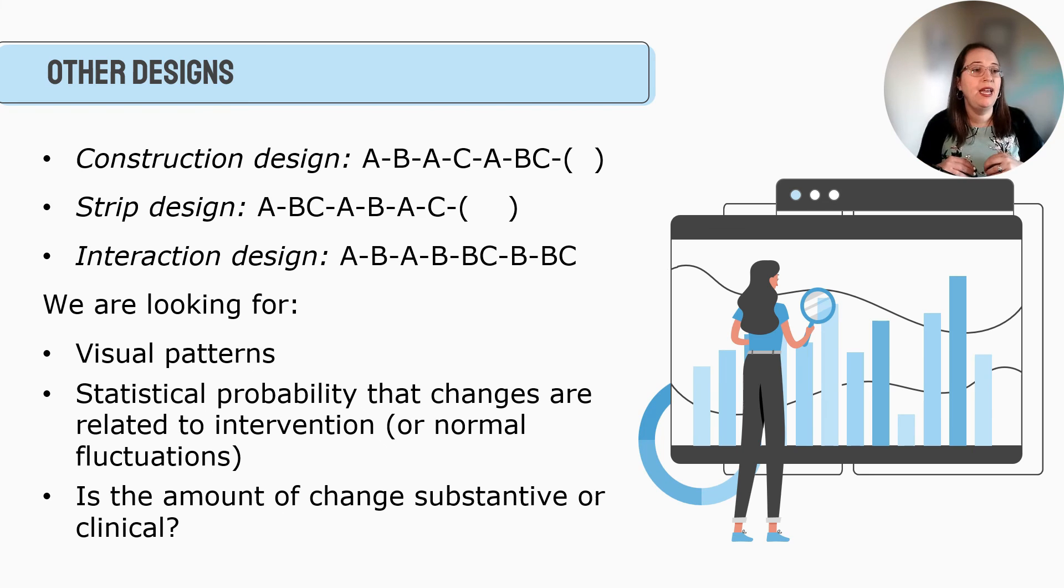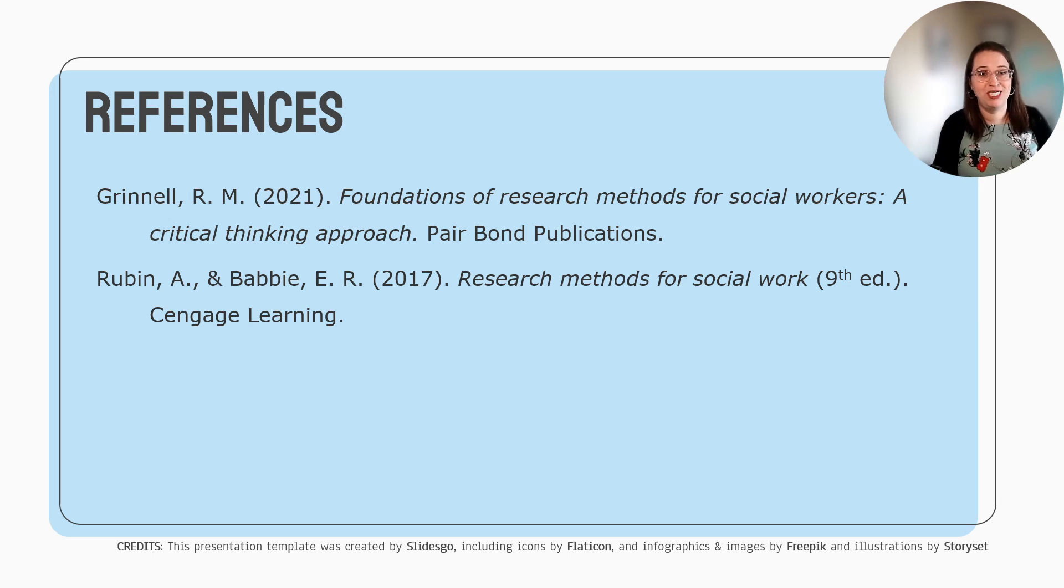So when we pop all of our data in, really what we're looking for a couple things. We're looking for visual patterns, right? All of these graphs that I created hopefully can help you see, oh, there's some visual movement that gives us some information. We also want to look at, is there a statistical probability that changes are related to the intervention or just normal fluctuations? If I am doing the same intervention on 15 people in single subject designs, and I'm getting the same consistent results doing a multiple baselines design, I might be able to say, statistically, I think the odds are higher that this is because of the intervention and just not normal fluctuations. And finally, is the amount of change substantial or clinical. So definitely thinking about those concepts. So that is single subject designs. Next time we'll talk about program evaluation and what that looks like. I hope this was helpful.